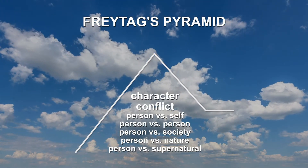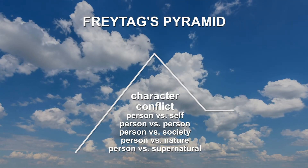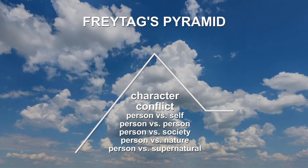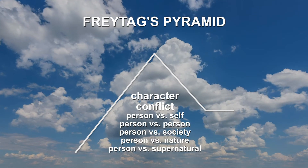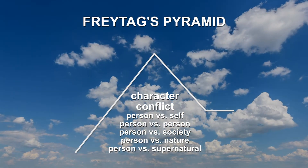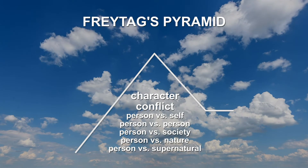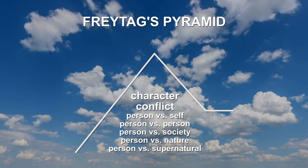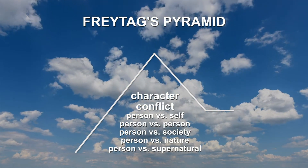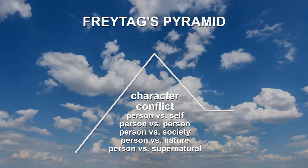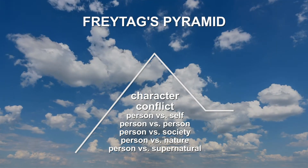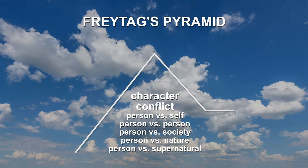Character and conflict are the foundations of great storytelling. Conflict directly impacts the climax. There are five main types of conflict: person versus self, person versus person, person versus society, person versus nature, and person versus supernatural.